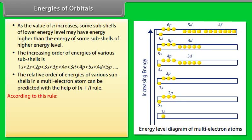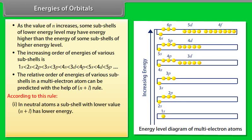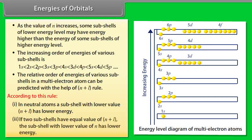According to the N+L rule: (1) In neutral atoms, a subshell with a lower value of N+L has lower energy. (2) If two subshells have equal values of N+L, the subshell with the lower value of N has lower energy.